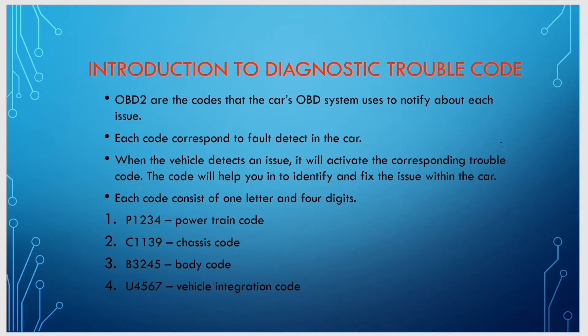Now I will introduce you to the Diagnostic Trouble Code, or DTC code. OBD2 codes are what the car's OBD2 system uses to notify about each issue. Each code corresponds to a fault detected in the car. When the vehicle detects any issue, it will activate the corresponding trouble code, and the code will help you identify and fix the issue within the car.